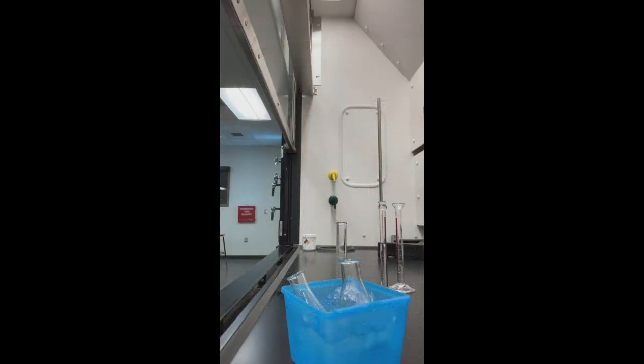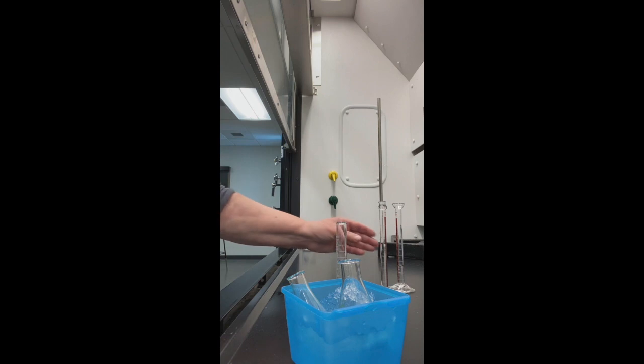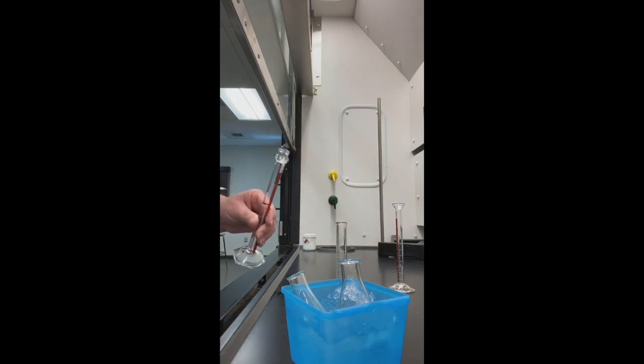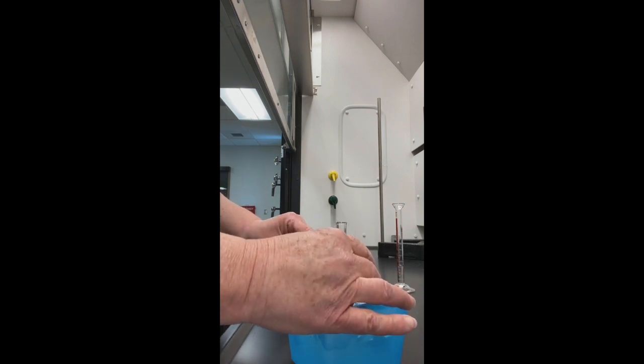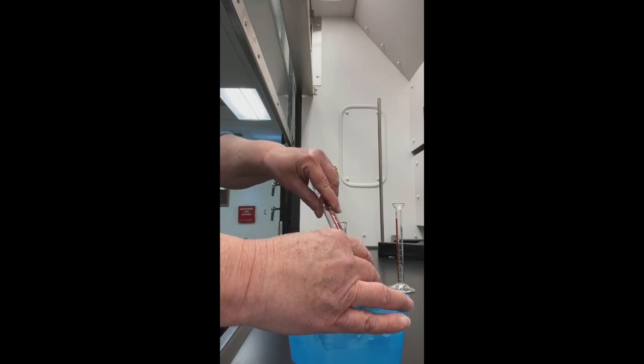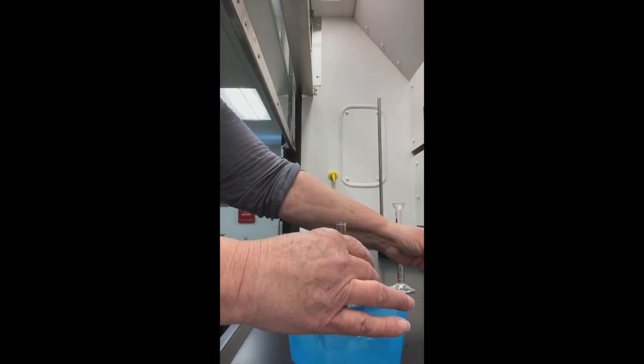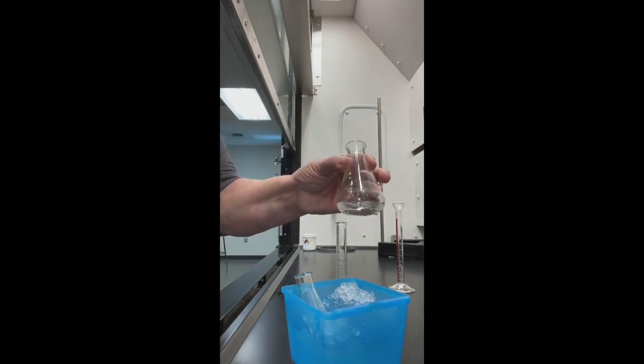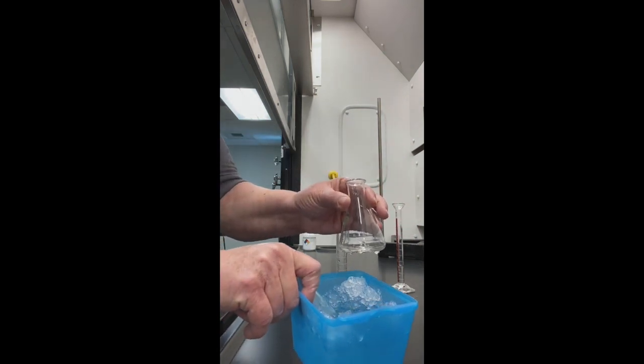Now I have measured out my acids. I'm going to add 7 mls of sulfuric acid to a 125 mL Erlenmeyer flask. Right now there's nothing else in this flask with it. It's just the sulfuric acid, and I have it in an ice bath.